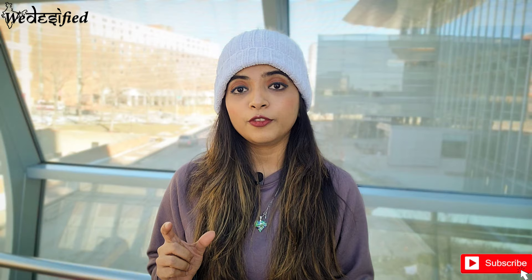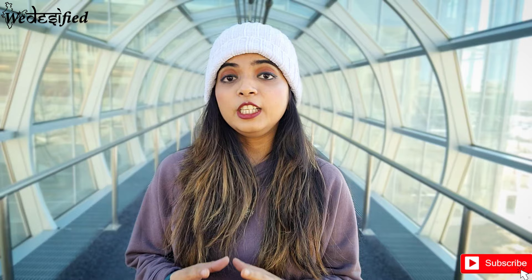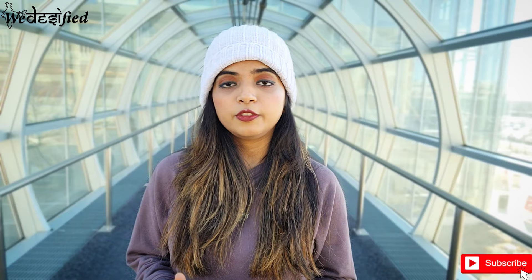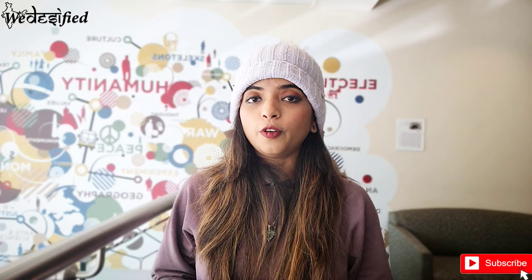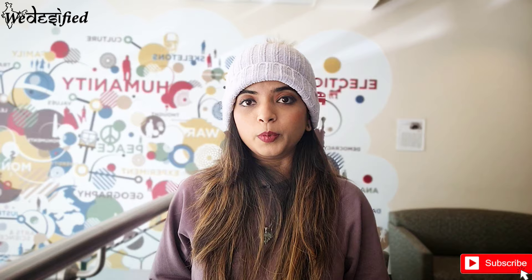The first section contains your personal information such as first and last name, date of birth, country of birth, citizenship, etc. These need to exactly match your passport. If you see any discrepancy, reach out to your international office immediately and get it rectified — they will issue you a new I-20 with corrected information. On the right corner you can see the type of visa you should be applying for. Next, you will see the school name as registered in SEVIS and the contact information of the school official. Following that, you can see the information about your program.